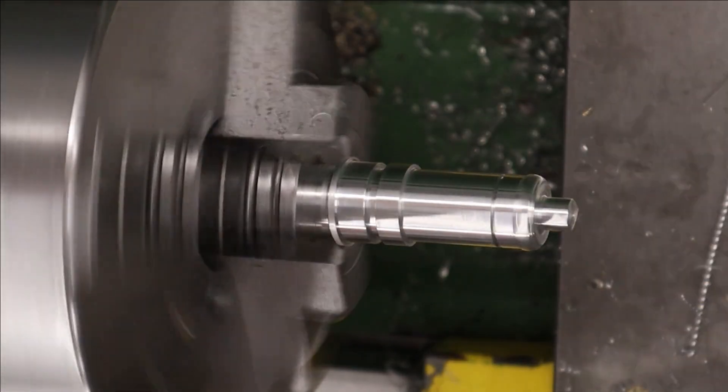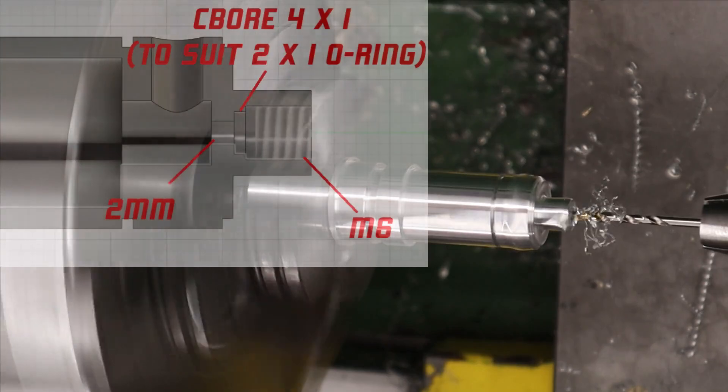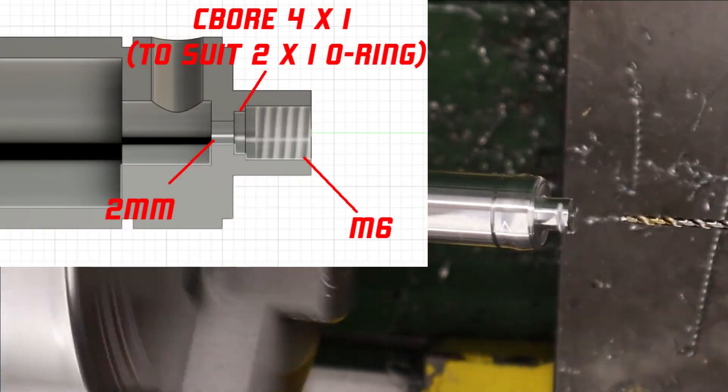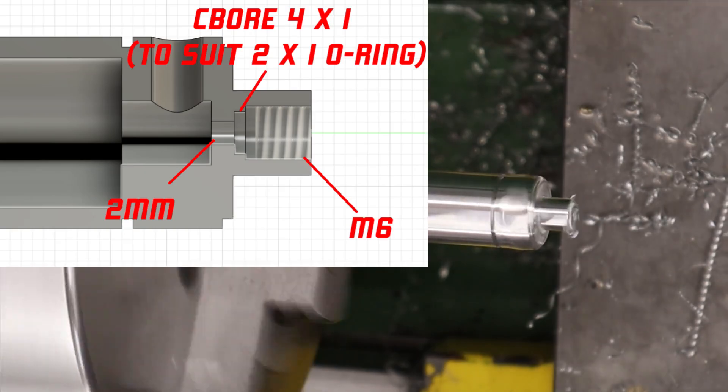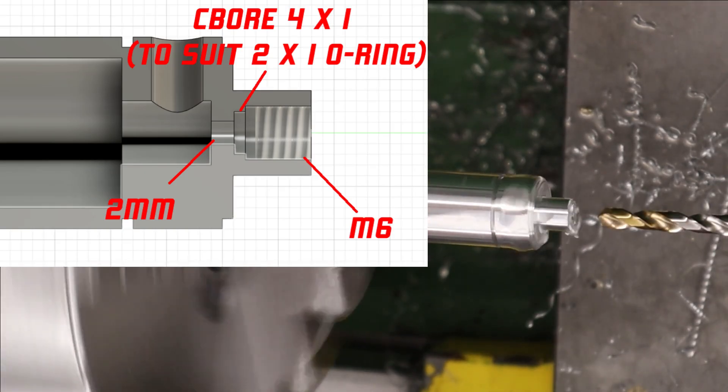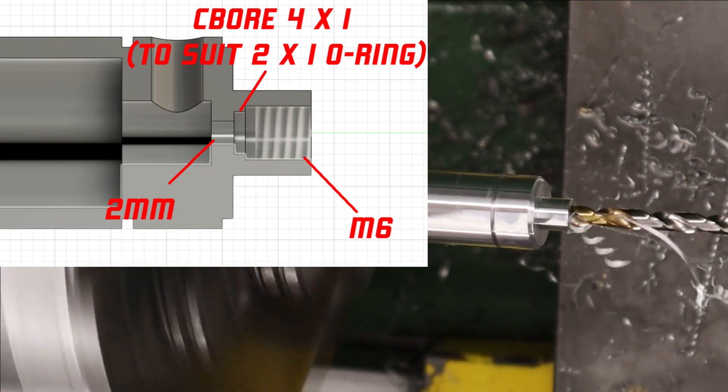But once all the external features are done we can move on to some of the internal features. First thing we're doing is drilling out the end two millimeters for the valve rod and we're doing this about 10 millimeters deep and the next thing to do is drill out the end to accept an M6 tap.